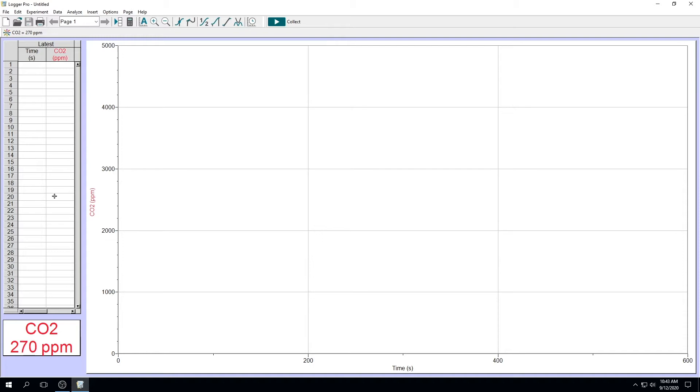Once the sensor has warmed up, you'll notice that the sensor reading has increased. The readings should be between 350 and 450 parts per million. If it is not, then you should calibrate your carbon dioxide sensor. So here you can see the reading is about 270 parts per million, so you'll need to calibrate.